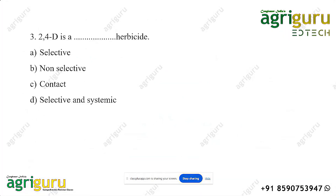2,4-D is a blank herbicide. The question is simple. The options are: selective, non-selective, contact, or selective and systemic. 2,4-D is a blank herbicide.